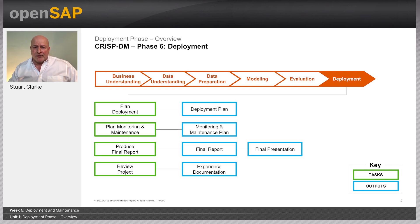There are four tasks in the phase: plan deployment, plan monitoring and maintenance, produce the final report, and review the project. A plan is required to deploy the data science results into the business, and also a plan is required for monitoring and maintenance of the models. It's important that the data science results become part of the day-to-day business environment, and a robust model monitoring process must be implemented and adhered to.